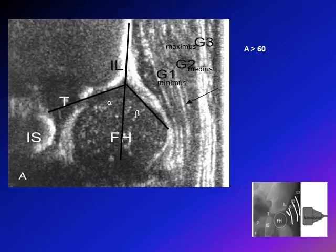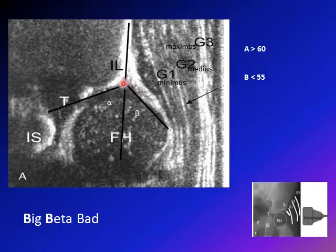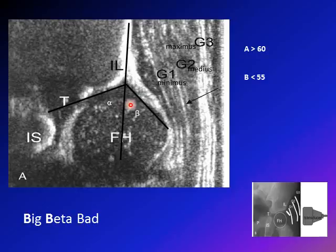The beta angle measures the cartilaginous acetabulum. You want this to be a small angle — a bigger beta angle means the femoral head is outside the acetabulum and is pushing the cartilaginous labrum outward. Remember: big beta bad. To measure it, one line goes along the iliac crest and the other along the cartilaginous acetabulum from the ilium-cartilage junction to the end of the labrum.